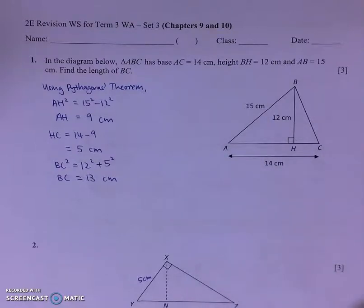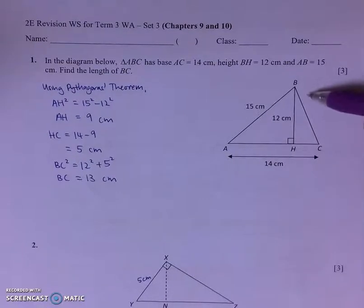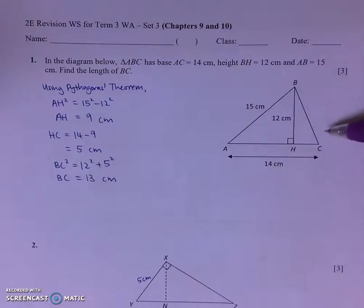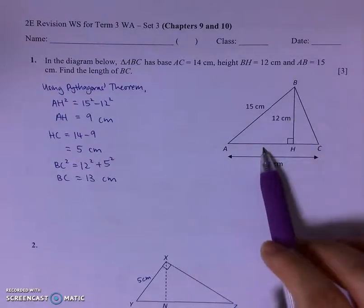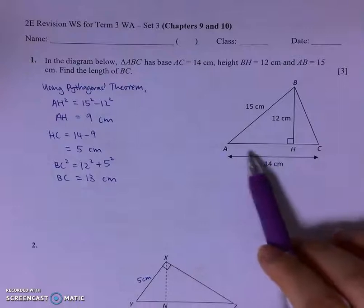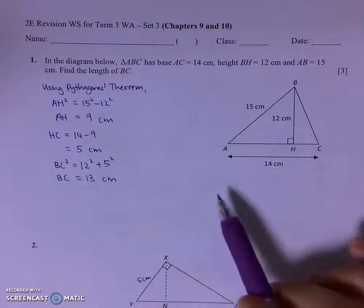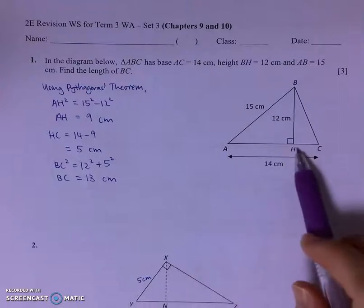So for question 1, the question says to find the length of BC, which is the hypotenuse of triangle BHC. So what we can do is, with the information given, first apply Pythagoras' Theorem to find the length of AH. That will help us find the length of HC.